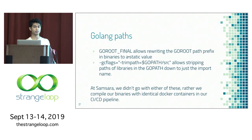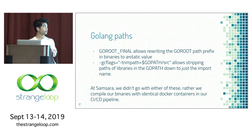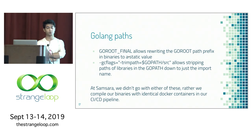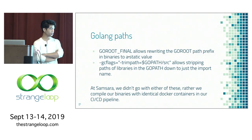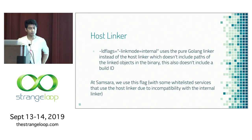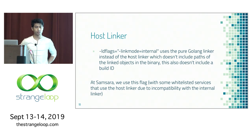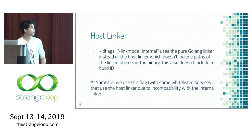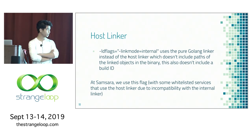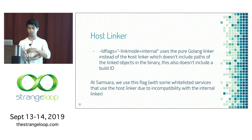There are strategies to tackle these issues. For Go paths, there's the GOROOT_FINAL environment variable where you can change the GOROOT path prefix to a static value. There's also the -trimpath flag added in Go 1.9 or 1.10 that strips library paths down to just the import name. We don't actually do either of those at Samsara — instead, we compile all our services inside identical build containers in our CI/CD pipelines. For the host linker issue, you can use Go's internal linker, which doesn't include paths of linked objects or the build ID. We use this flag at Samsara with some whitelisted services that don't work with the internal linker.